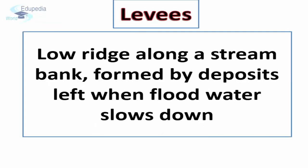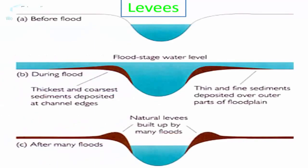Levees are low ridges along a stream bank formed by deposits left after flood water slows down. Continuous deposition of flood plains year after year causes elevation of the river bed. The stage comes when the river flows beyond its banks during times of high discharge. While water flows with high velocity in the main river valley, it flows sluggishly beyond the banks due to friction. As a result, there is a deposition of suspended load beyond the banks in the form of long parallel mounds along the river bank, which are known as natural levees.